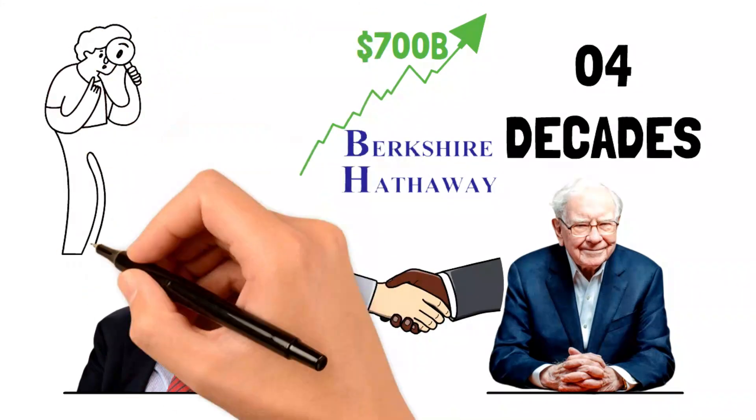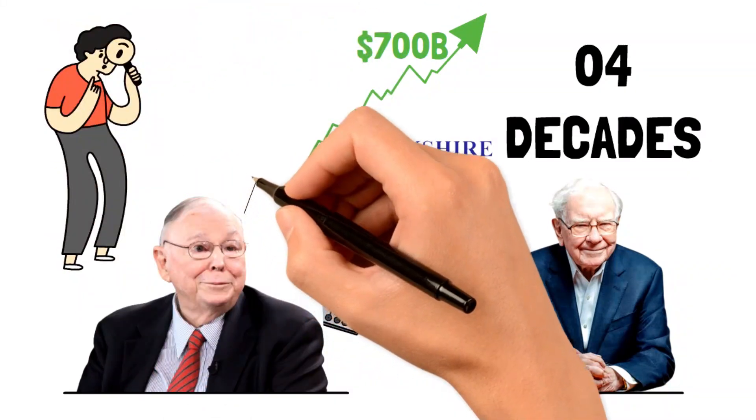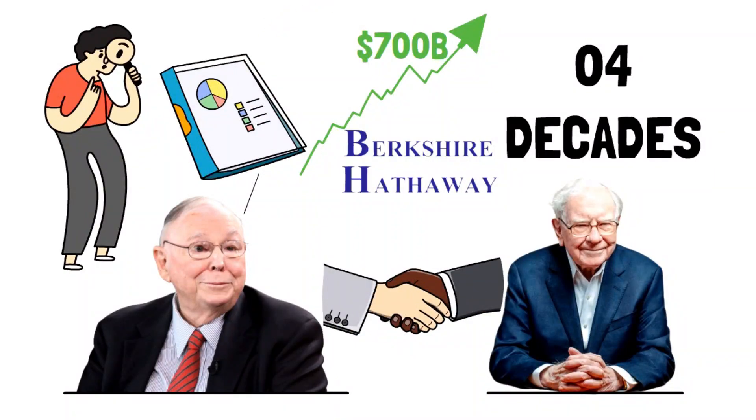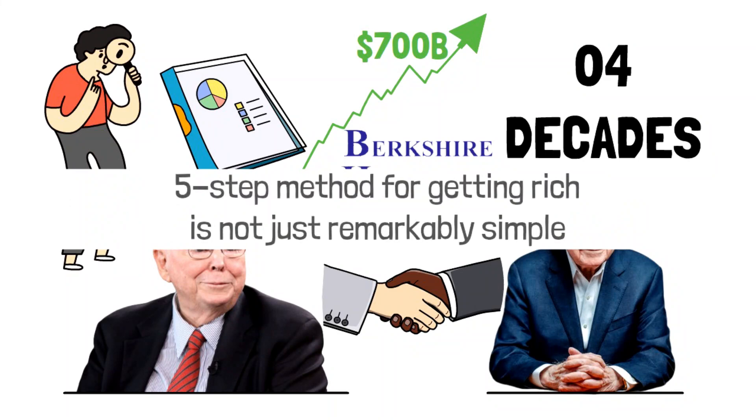I've conducted extensive research on Munger's path to wealth and realized that his genius lies in places you might not expect. I discovered that his five-step method for getting rich is not just remarkably simple, but it's also something anyone can execute. Let's break it down together.